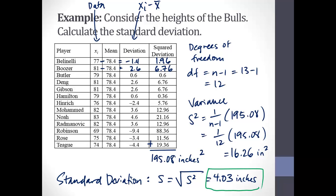So there is calculating the standard deviation — there's our final answer. My first step was to calculate how far away each observation is from the mean, which is where we get the idea of spread. We calculate our overall mean, we see how far our observations are from that, then we add all that up and sort of average that distance. That's kind of how you can think about it.